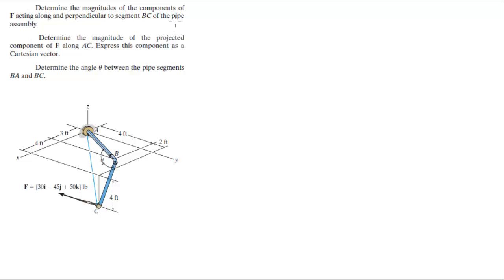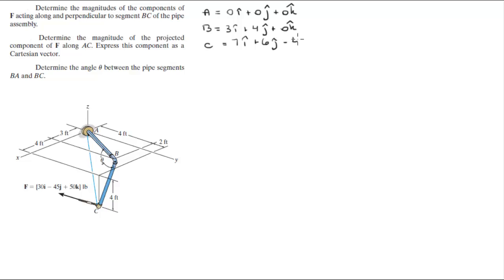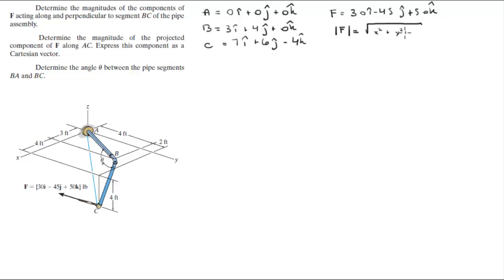The first thing we're going to do is find all the position vectors of the points involved. A is equal to 0i + 0j + 0k. B is equal to 3i + 4j + 0k. C is equal to 7i + 6j − 4k. F is equal to 30i − 45j + 50k. We're also going to find the magnitude of F, which is the square root of the x, y, and z components squared, and it comes out to be 73.7.